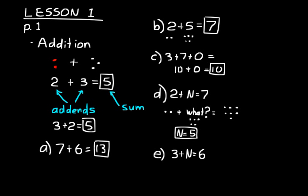Let's do one more problem with missing addends. Three plus n equals six. So this time, let's try not to use dots. Let's just think to ourselves, three plus what equals six? Well, that would be three, right? Because three plus three equals six. And you could do that.